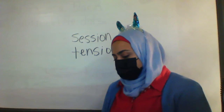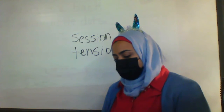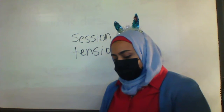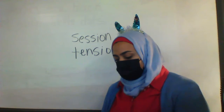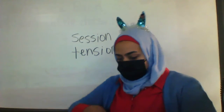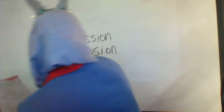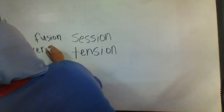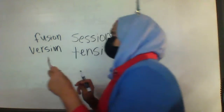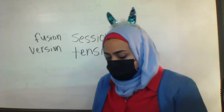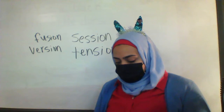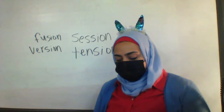Now echo these words and listen for the sound that's the same in the final position. Fusion. Version. What sound do you hear in the final position? Shun. Look at these words — fusion and version — what is making that shun sound? S-I-O-N. That's right. The letters S-I-O-N are both making the shun and the zhun sounds.